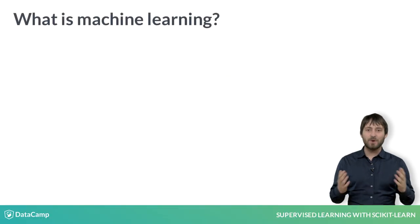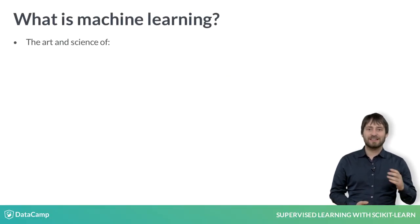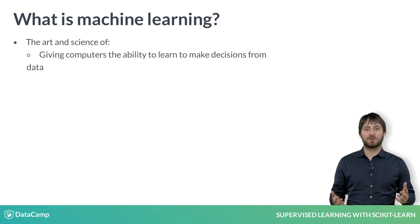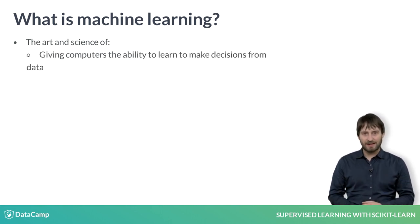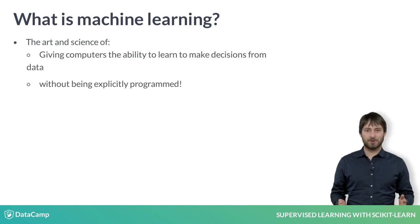But what is machine learning? Machine learning is the art and science of giving computers the ability to learn to make decisions from data without being explicitly programmed.